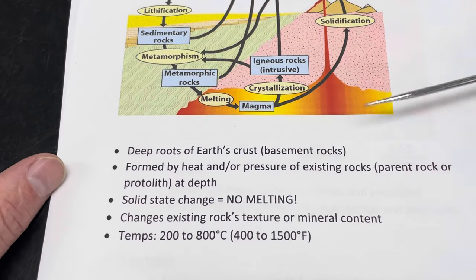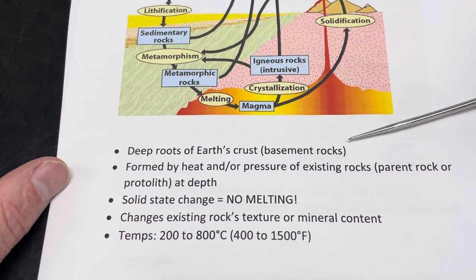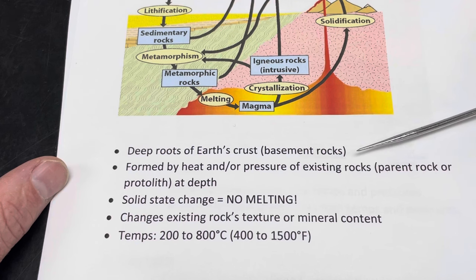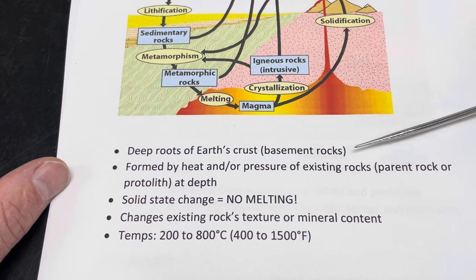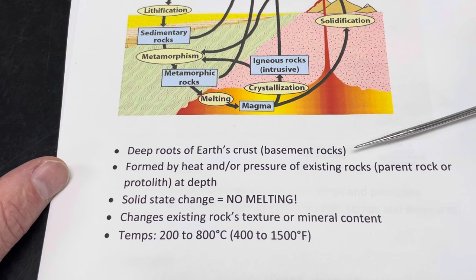Metamorphic rocks tend to form what we call the basement rocks, the very deep roots of our earth's crust, deep below the mountains. Even wherever you're standing, miles below your feet, there are metamorphic rocks. So these rocks tend to form a lot of times the oldest rocks in the crust and also the deepest rocks.